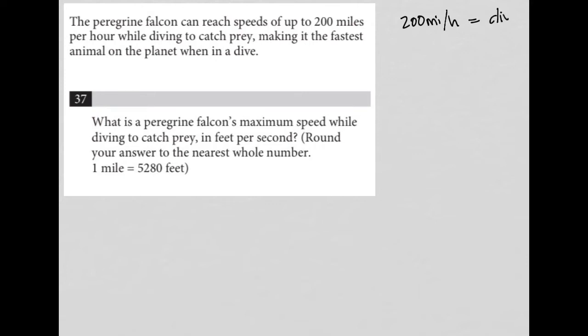Okay, so this is equal to dive speed. So question 37 says, what is a peregrine falcon's maximum speed while diving to catch prey in feet per second? So round your answer to the nearest whole number, and we're told that one mile equals 5,280 feet.